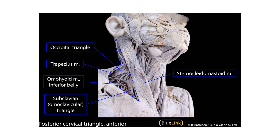This specimen shows the posterior triangle, with the inferior belly of the omohyoid dividing it into a bigger occipital triangle above and a smaller supraclavicular triangle below. Here we can see the great auricular nerve, the transverse cervical nerve, the supraclavicular nerves, and the external jugular vein, which pierces the roof of the posterior triangle and drains into the subclavian vein.